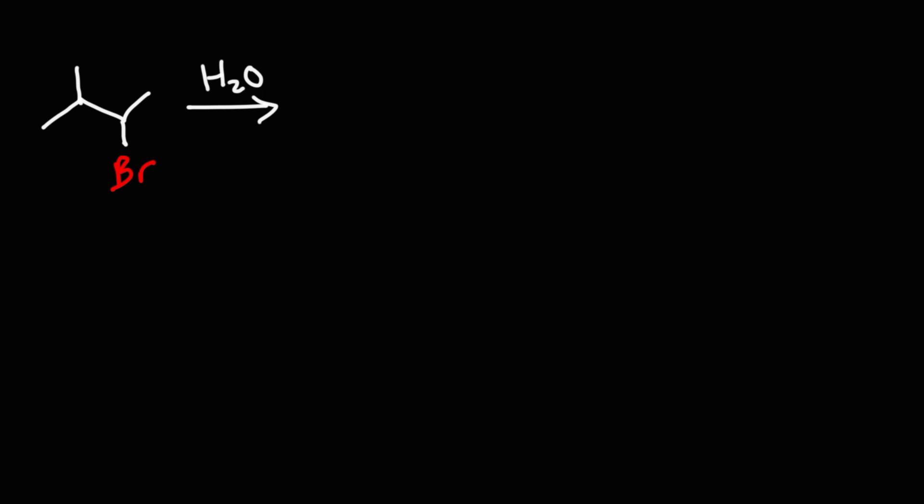Let's consider this reaction. We have a secondary alkyl halide. The carbon that bears the bromine is attached to two other carbon atoms, so that's why it's secondary. We have a protic solvent, H2O. The mechanism for this particular example is going to be the SN1 reaction, first order nucleophilic substitution. What's going to be the major SN1 product for this reaction?